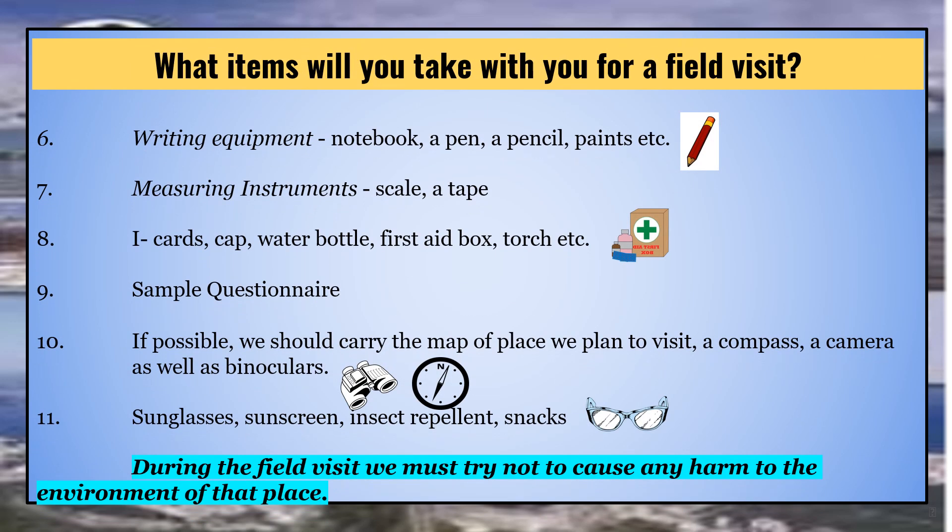Sixth, carry writing equipment — always carry a notebook, a pen, a pencil, paints, etc., whatever you require. Seventh, carry measuring instruments like a scale and a tape. Eighth, carry ID cards, which is very essential in case you get lost, along with a cap, water bottle, first aid box, torch, etc. Ninth, carry a sample questionnaire — that is, a list of questions you want to ask or information you want to know. Tenth, if possible, carry the map of the place you plan to visit, a compass to show direction, a camera, and binoculars. Eleventh, carry sunglasses, sunscreen lotion, insect repellent, snacks, etc. Please note: during the field visit, we must try not to cause any harm to the environment of that place.